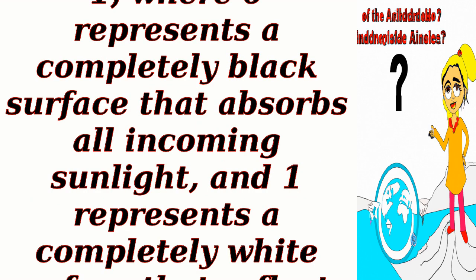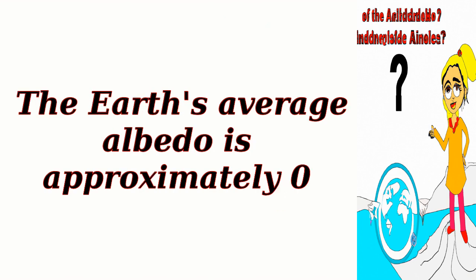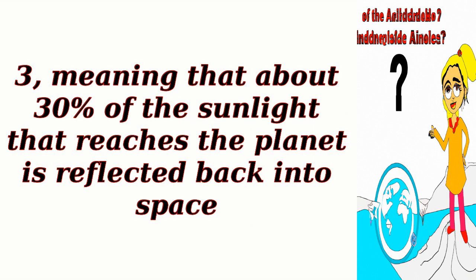Albedo is measured on a scale from 0 to 1, where 0 represents a completely black surface that absorbs all incoming sunlight, and 1 represents a completely white surface that reflects all incoming sunlight. The Earth's average albedo is approximately 0.3, meaning that about 30% of the sunlight that reaches the planet is reflected back into space.